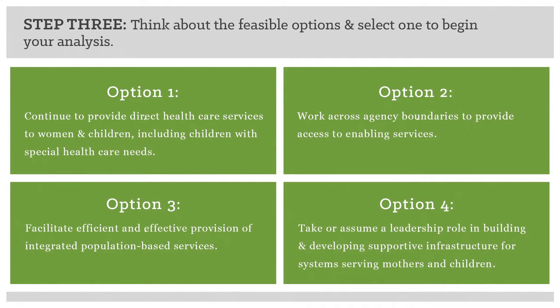Option one: continue to provide direct health care services to women and children, including children with special health care needs. Option two: work across agency boundaries to provide access to enabling services. Option three: facilitate efficient and effective provision of integrated population-based services. Option four: take or assume a leadership role in building and developing supportive infrastructure for systems serving mothers and children.